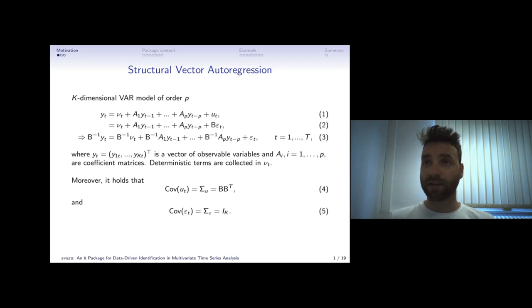These models have an error term epsilon T which is serially as well as contemporaneously uncorrelated, which means each of these shocks has a unique economic interpretation and we can interpret movements in the YT vector as being driven by the accumulative effects of these structural shocks.